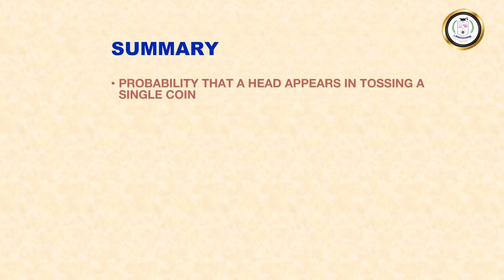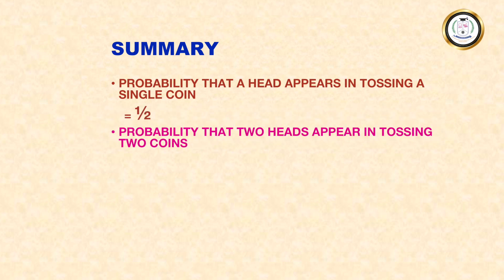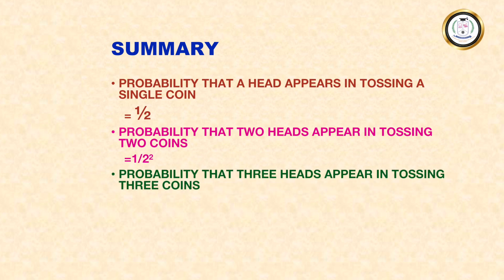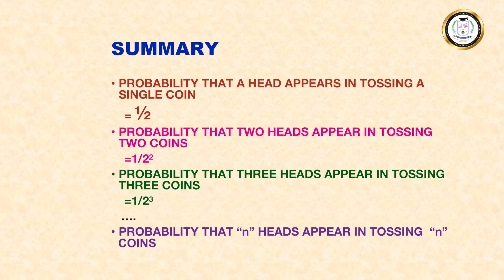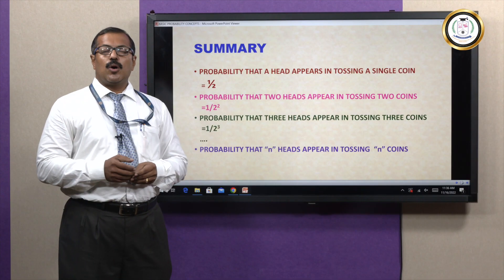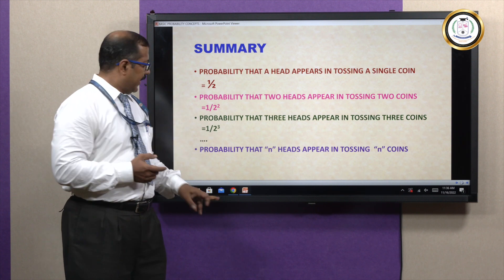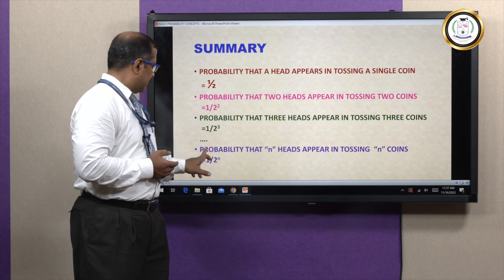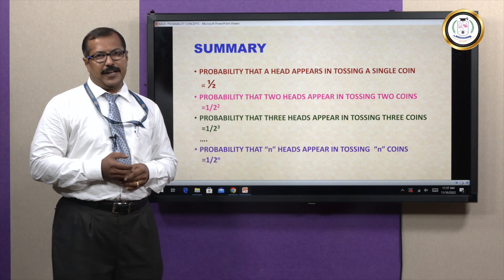Summarizing all that we have done: when we toss one coin, getting one head is one by two. In tossing two coins, getting two heads is one by two squared. Getting three heads in tossing three coins is one by two cubed. And in general, we can generalize: in tossing n coins, getting n heads is one by two power n.